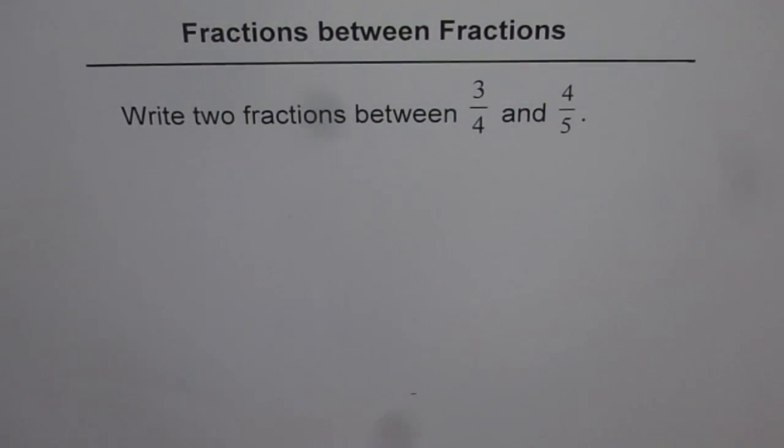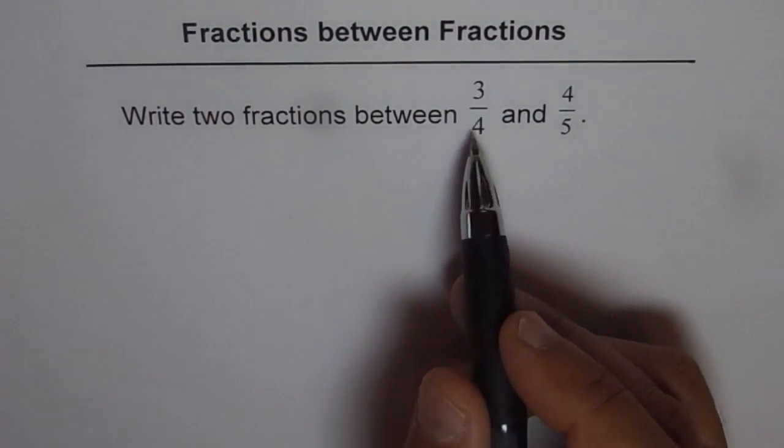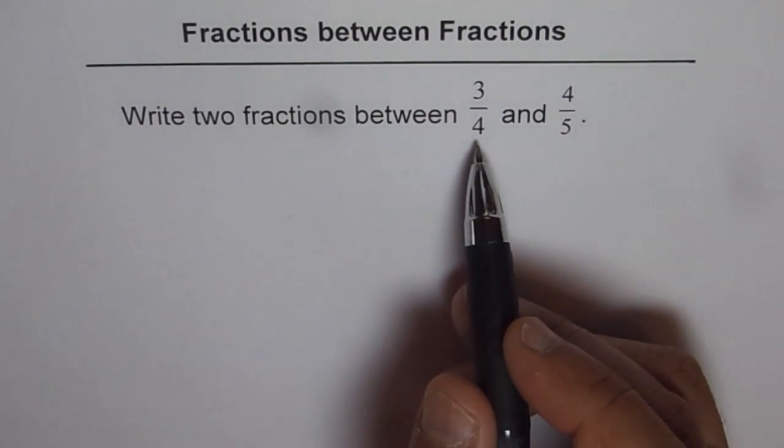write two fractions between 3/4 and 4/5. Let's figure out how to write fractions between fractions. The lower one is 3/4 and the higher one is 4/5.